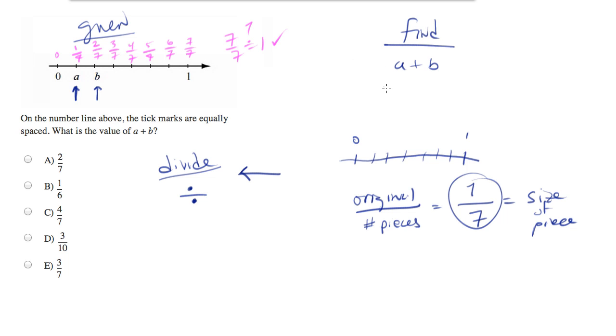So now we can plug in and solve. We know a is one seventh and b is two sevenths. And we have a common denominator, so you can add them together and we'll end up with three sevenths, which is answer choice E.